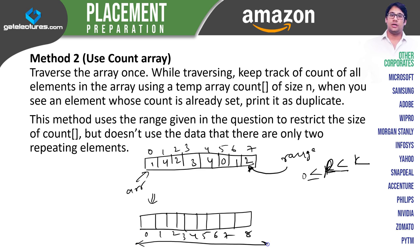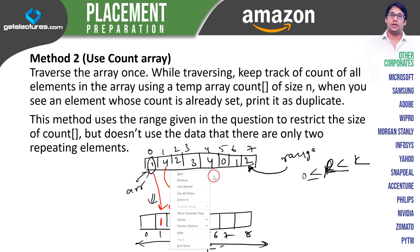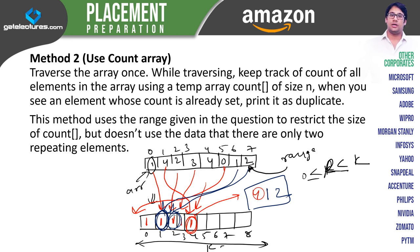We take every element from the original array. The first element is 1, so in the count array we go to index 1 and put 1. The second element is 4, so we go to index 4 and put 1. Third element is 2, so at index 2 we put 1. Next is 3 so we put 1 at index 3. Next element is 4 — we go to index 4, see it is already 1, so 4 is repeating itself. Next is 0 — put 1 at index 0. Next is 1 — index 1 is already 1, so 1 is repeating. Next is 2 — index 2 is already 1, so 2 is also repeating.